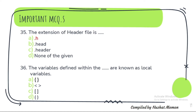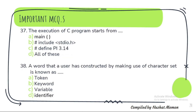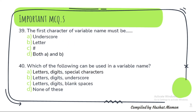Question 36: The variables defined within the curly brackets are known as local variables. Question 37: The execution of a C program starts from main — option A. Question 38: A word that a user has constructed by making use of a character set is known as an identifier. Question 39: The first character of a variable name must be either underscore or a letter.